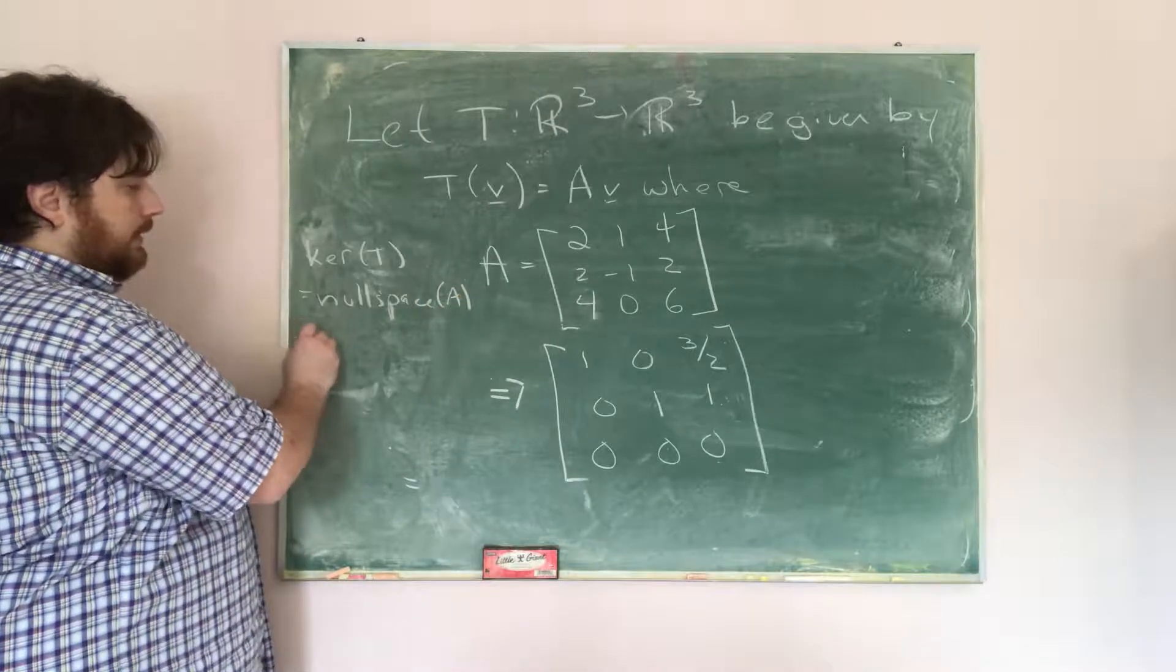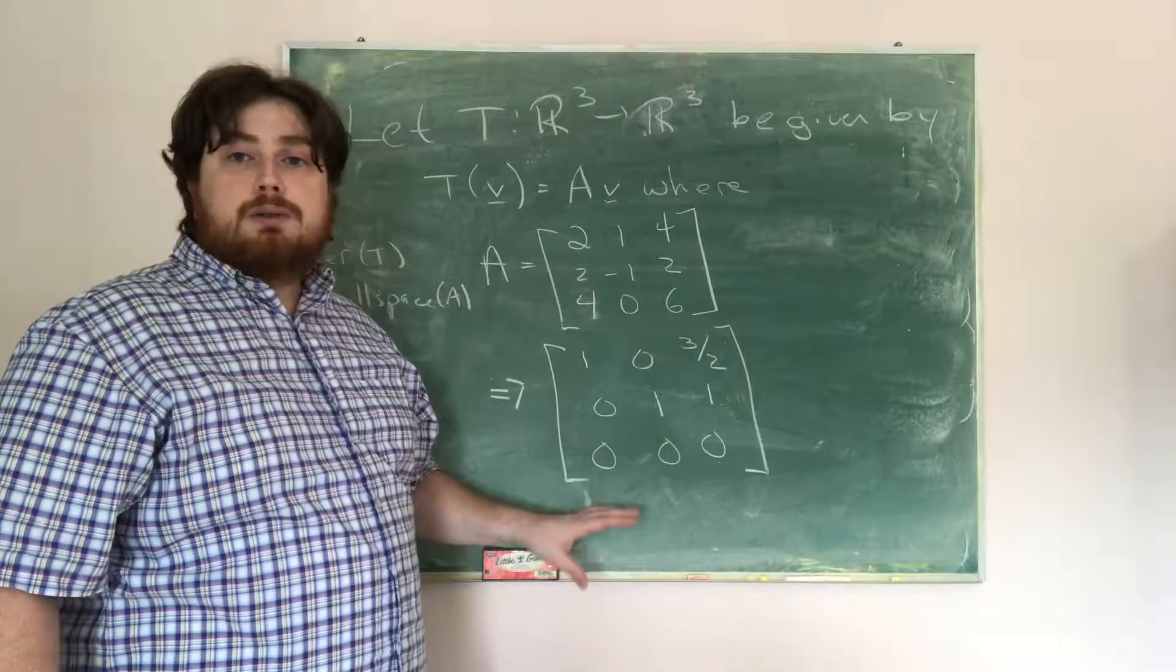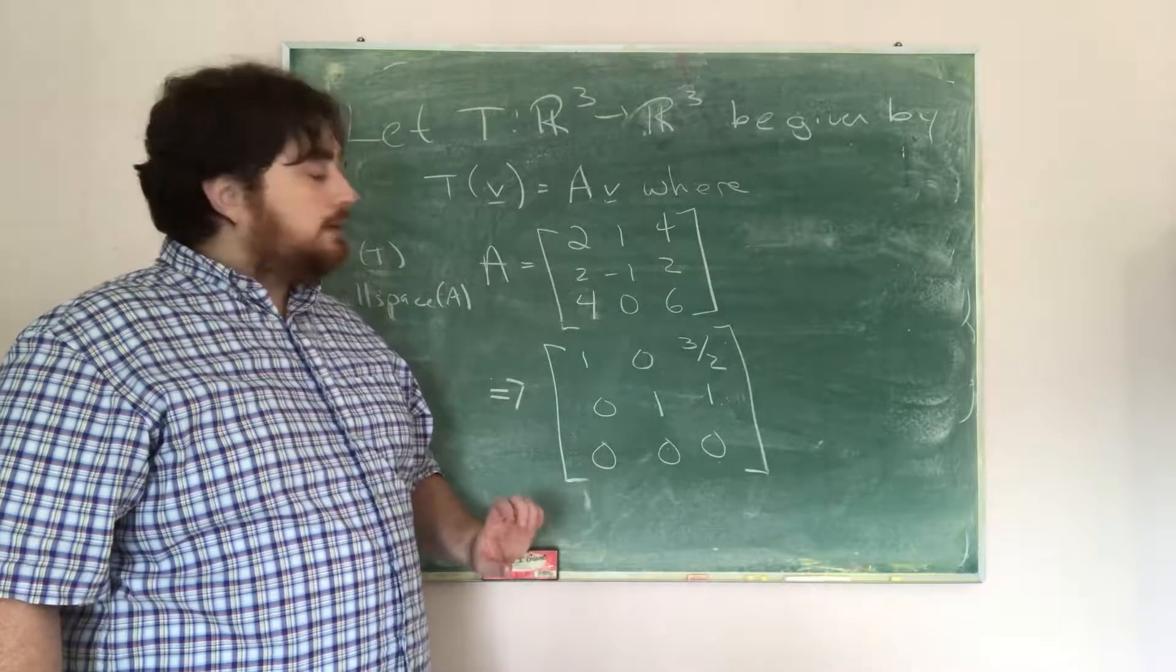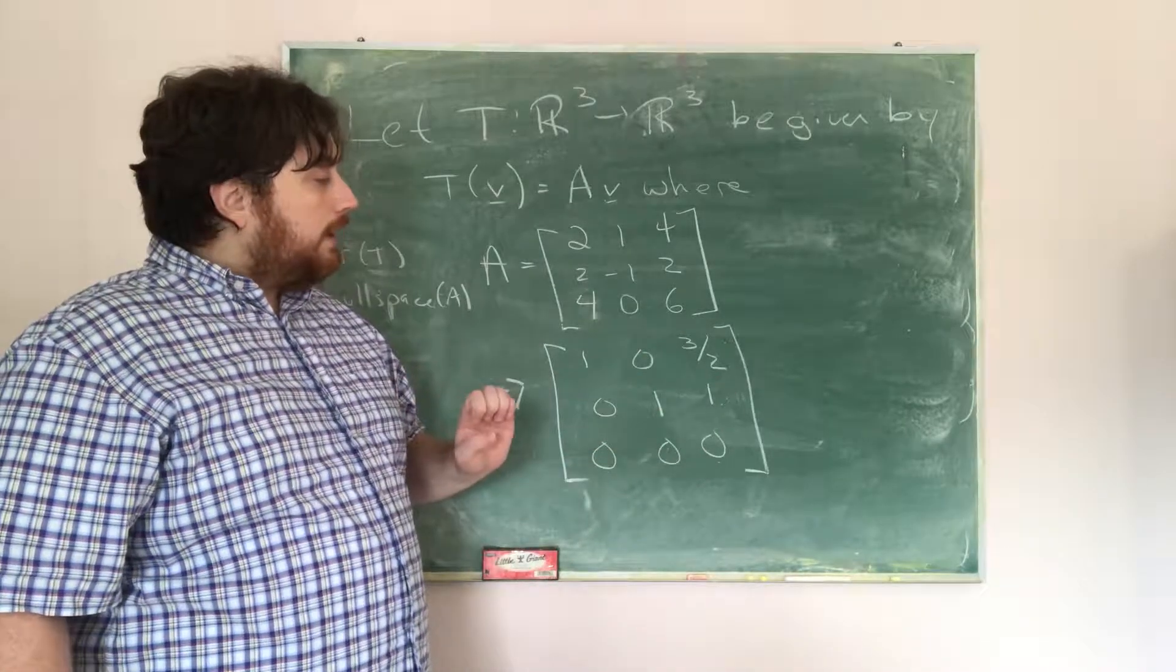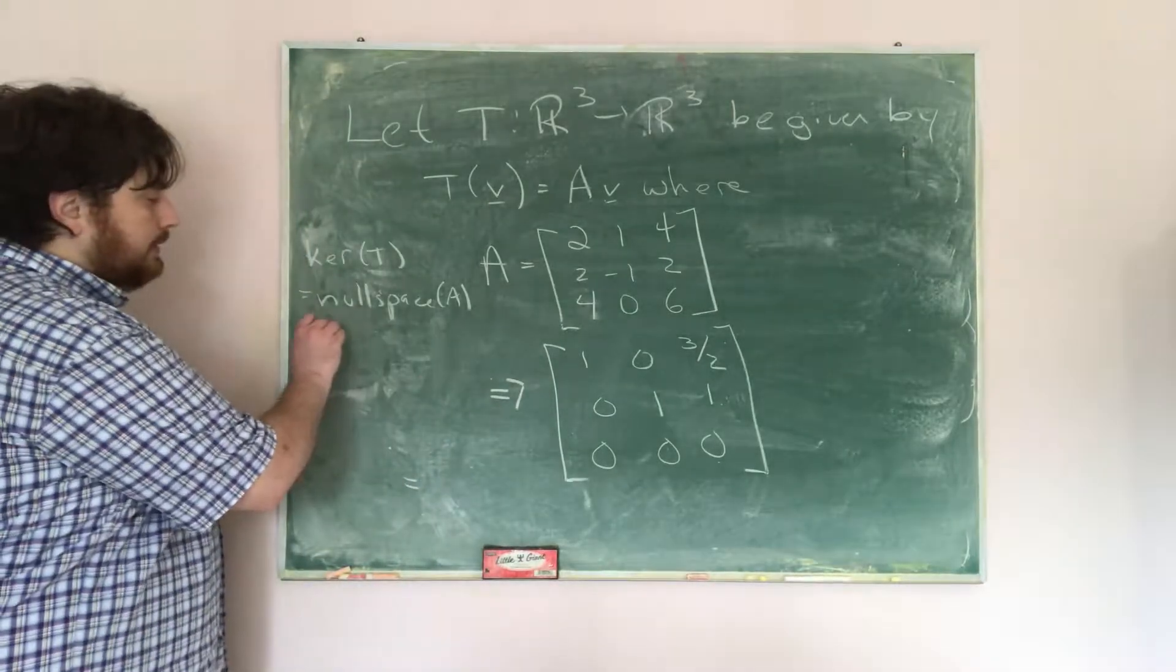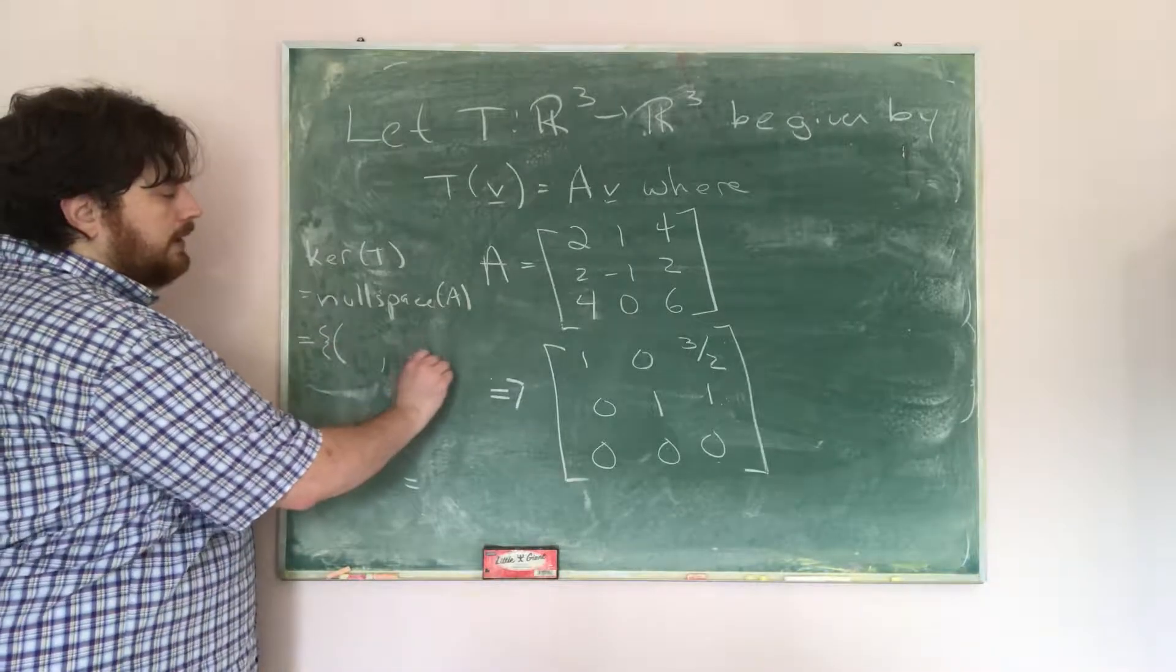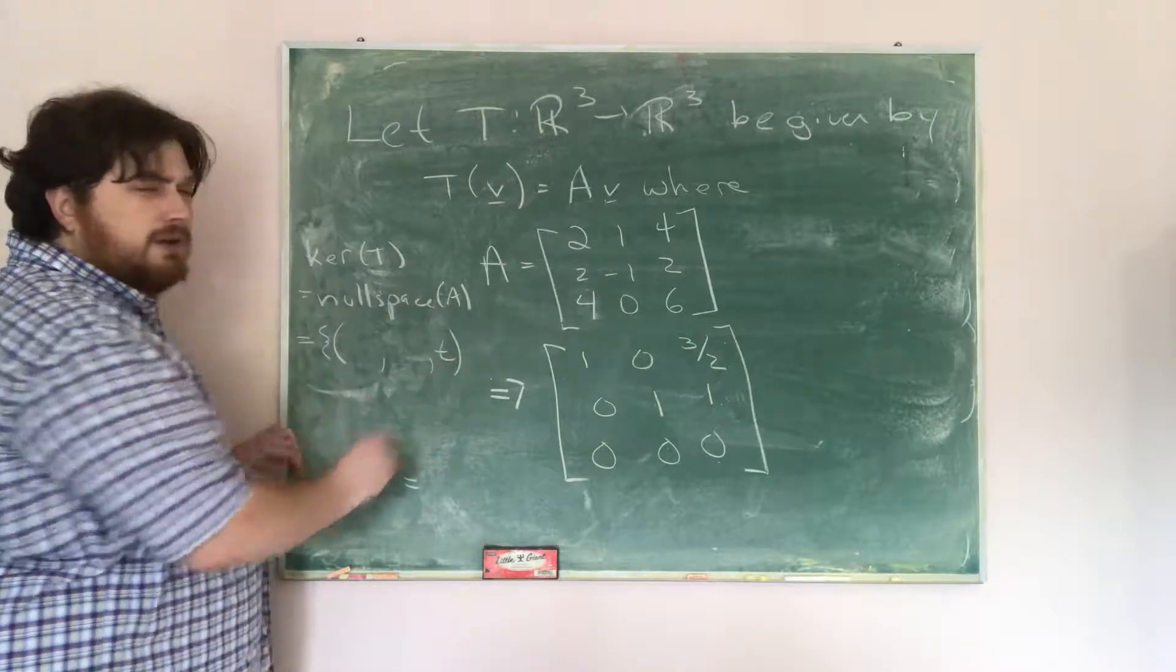And in order to find the null space of A, we really just need to find, well, what is the null space of the row reduced form? And so if I want to set this equal to zeros, well, what I have is I have a free variable, namely x3. And so I'm going to say the null space is equal to the set of all vectors of the form. Well, x3 can be whatever it wants, so we're going to call it T.